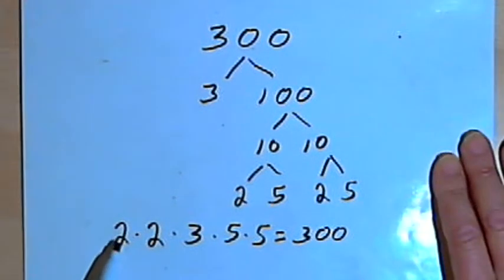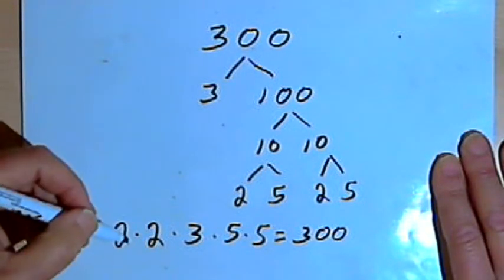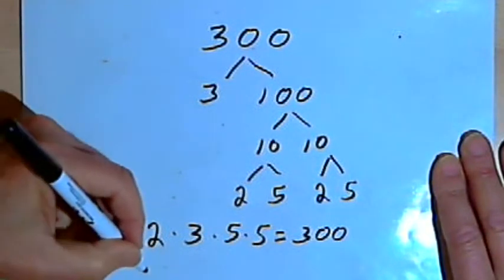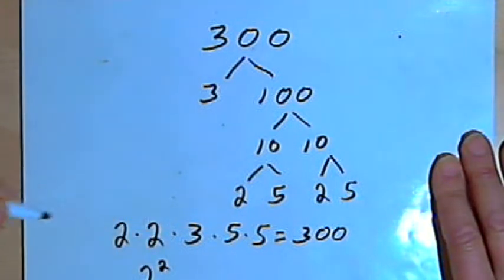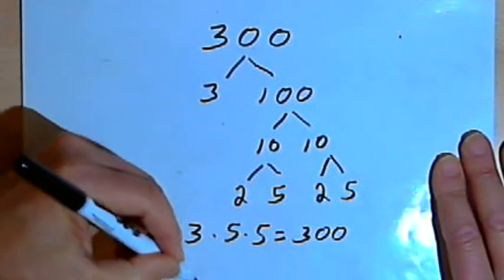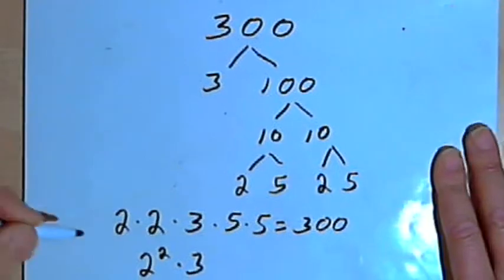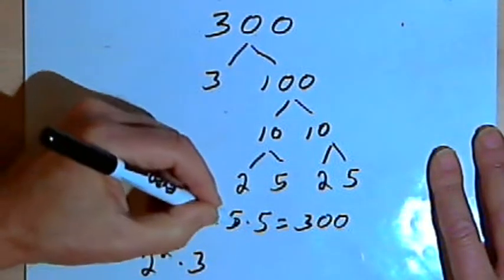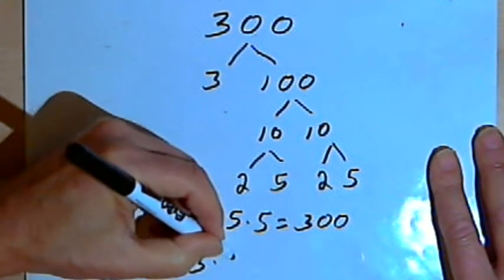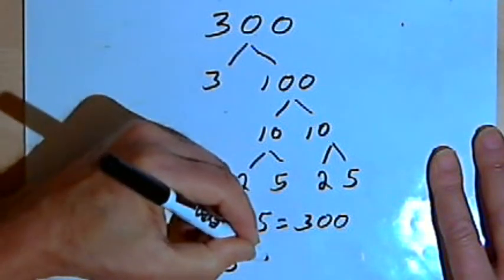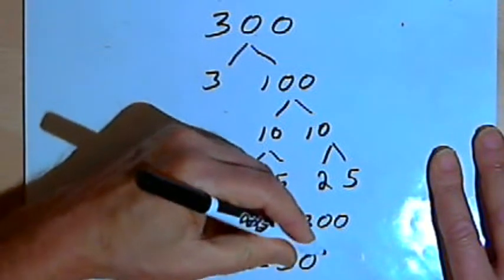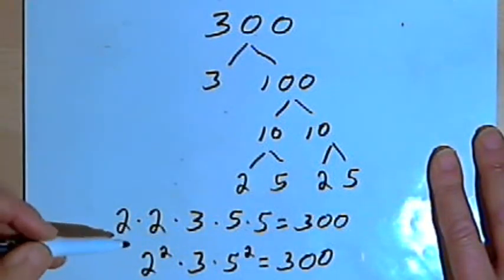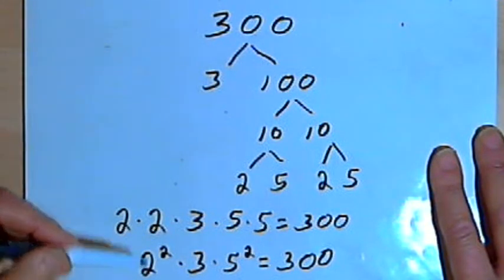Now if I want to do this in a condensed version, I can use exponents. So instead of writing 2 times 2, I'll write 2 squared. The 3 is just a 3 to the first power. I'm not gonna bother with an exponent for that. I've got 2 5s. So I have 5 squared. And that's going to equal 300. So this is my prime factorization of 300.